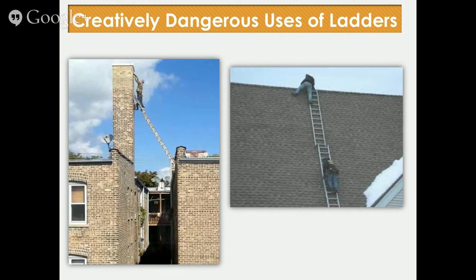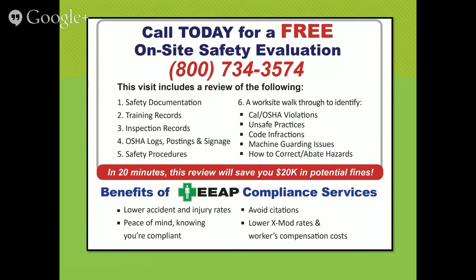On a slanted roof, placing a ladder to reach the top creates a double violation: the ladder is not secured and there is no fall protection. When workers are doing work at the top — making it a work platform — fall protection is required. These double violations can result in combined OSHA citations reaching into the $30,000 range.